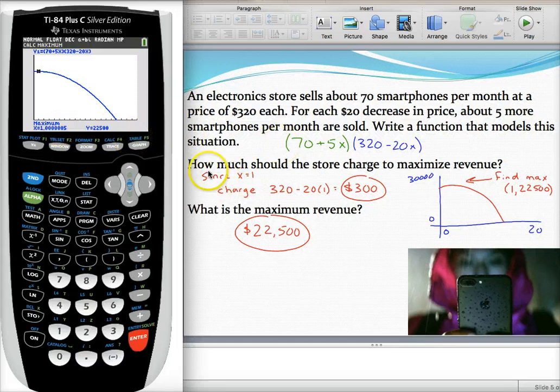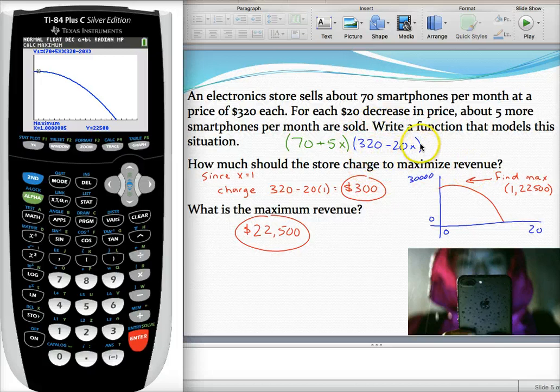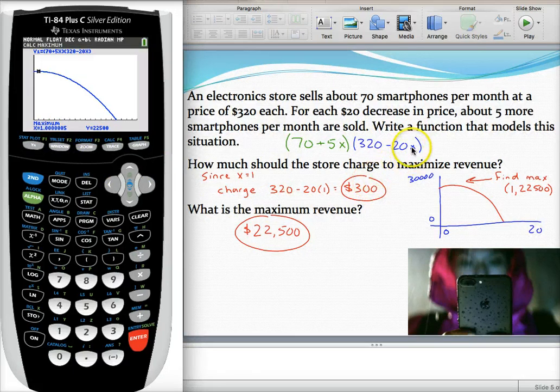So the question was, how much should we charge in order to maximize revenue? Well, remember this blue parentheses represented what we're charging. And X was how many times we're going to reduce the price. So what that one means is I'm reducing the price one time by $20.